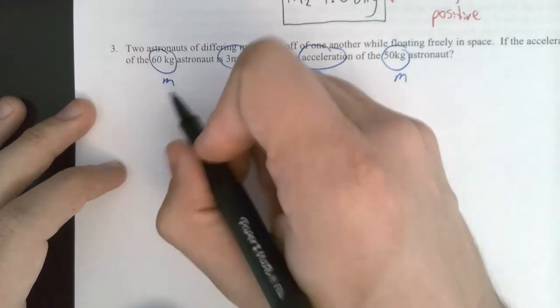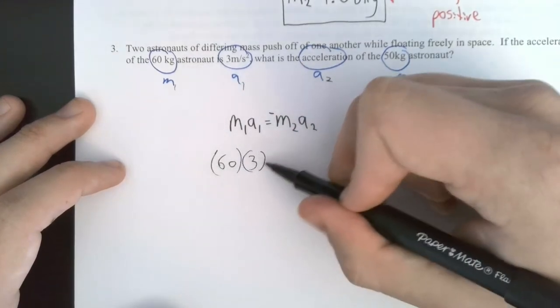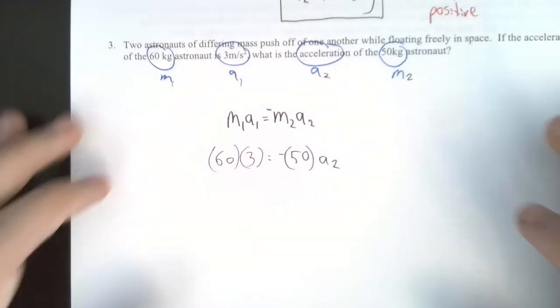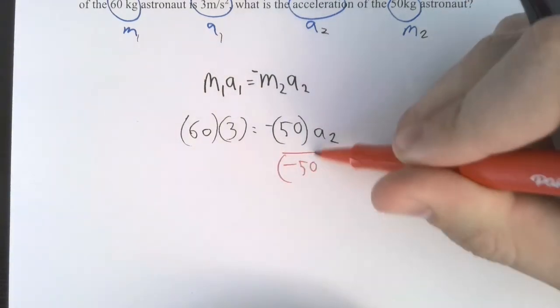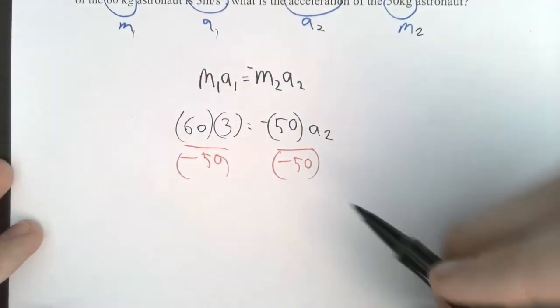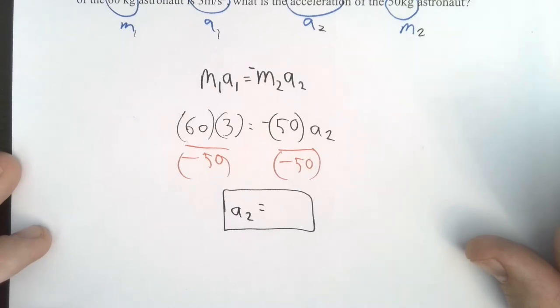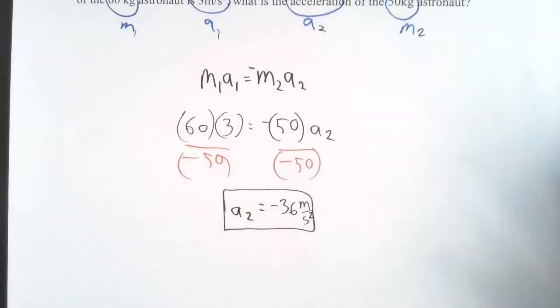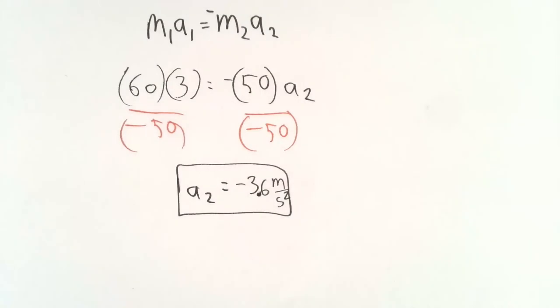So here's our equation. We'll plug everything in. This one's pretty easy. I mean, that's the heavy astronaut and then we've got the lighter weight astronaut over here. So it's 60 times 3 equals negative 50 times A2. Once again, pretty easy. We divide both sides by negative 50. And you could probably type that in your calculator all at once. 180 divided by negative 50. It looks like we'll get a negative answer here. Negative 3.6 meters per second squared.